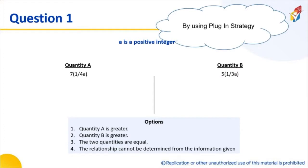Here is the first example of the plug-in strategy. It's given to you that a is a positive integer. This line above is very important in quantitative comparison questions. They are giving us two quantities to compare: 7 times 1 by 4a and 5 times 1 by 3a. This is not the neatest expression, but that's the expression we have been given.